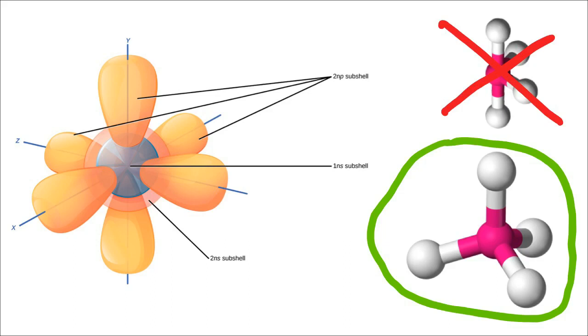And so we need to tweak our theory, not throw it away entirely, but change it a little bit so that it agrees with the data that we're collecting. And hybridization is a way of doing that. How do you change the theory to make it agree with experiment?